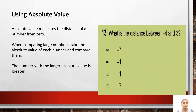Using absolute values: absolute value measures the distance of a number from 0. When comparing large numbers, take the absolute value of each number and compare them. The number with the larger absolute value is greater. The absolute value of a real number x is the non-negative value of x without regard to its sign. For example, the absolute value of 5 is 5, and the absolute value of -5 is also 5. The absolute value of a number may be thought of as its distance from 0 along the real number line.